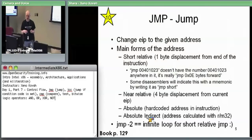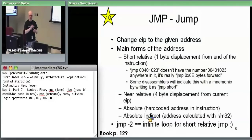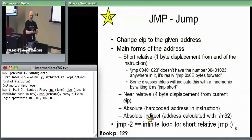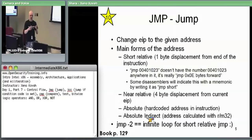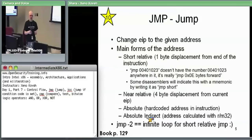Absolute indirect is what's used for things like function pointers in C. A function pointer is reconfigurable — you move the pointer address into a register and then call or jump to it. In C you can have a function pointer that points at one function or another, and that flexibility is handled through the absolute indirect form with the call instruction.